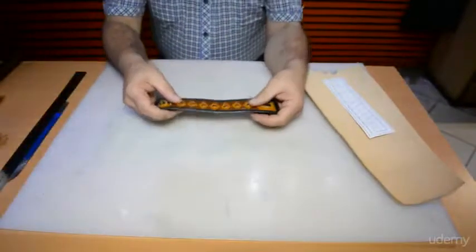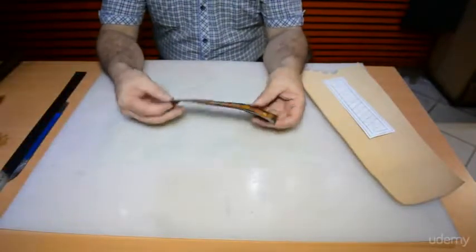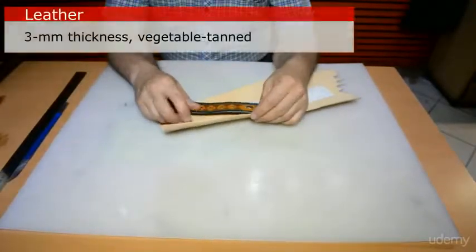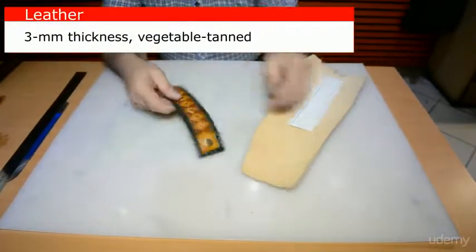Hello everyone and let's start with cutting out a necessary piece of leather for our hand bracelet. We are going to use 3 mm thin vegetable tanned leather.